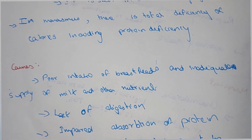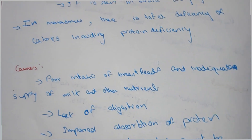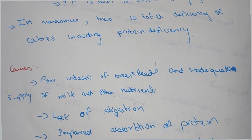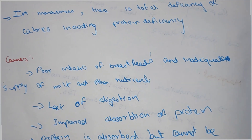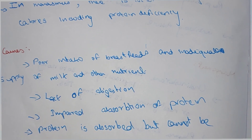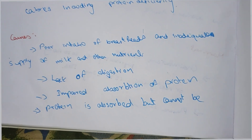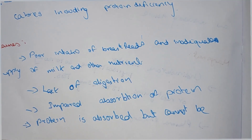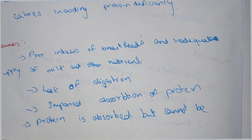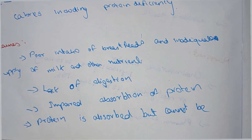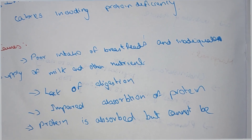Other causes include inadequate supply of milk and other nutrients. In marasmus there is also lack of digestion, impaired absorption of protein, and protein that is absorbed but cannot be metabolized satisfactorily.